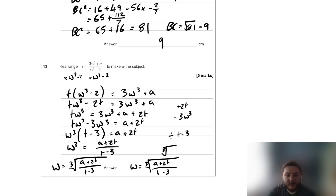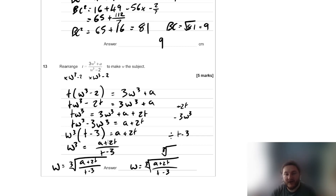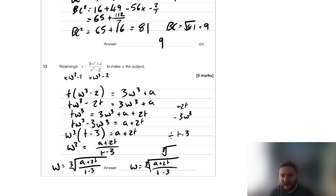I blasted through that quickly, but it's an absolute classic method: multiply out, collect all the terms you want on one side, factorise out that term, divide by everything else, then use a square root or cube root at the end. It's a common but difficult way of rearranging formulae that tends to come up at higher levels.